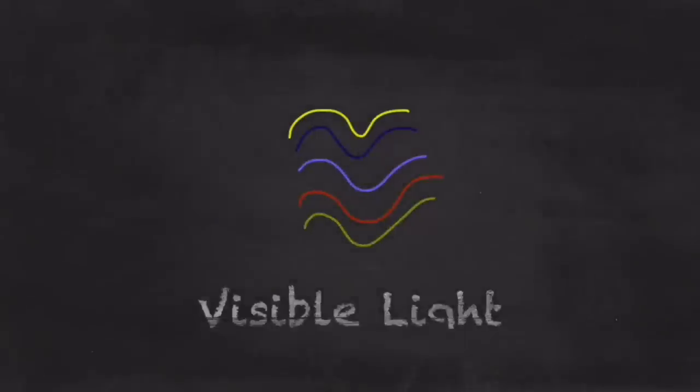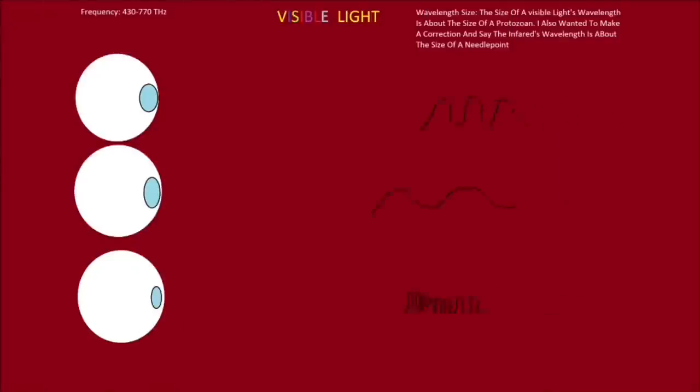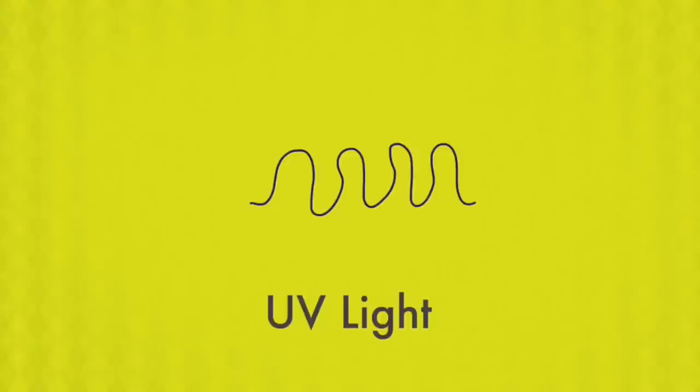Next up we have visible light, the most important and boring part of the electromagnetic spectrum. The special thing about visible light is that it's the only version of the electromagnetic spectrum which has a wavelength our eyes can detect, in contrast to the other parts of the electromagnetic spectrum, which have wavelengths too big or small for our eyes to see. But we already interact with visible light in our everyday lives, so let's take a look at other parts of the electromagnetic spectrum, such as ultraviolet light.